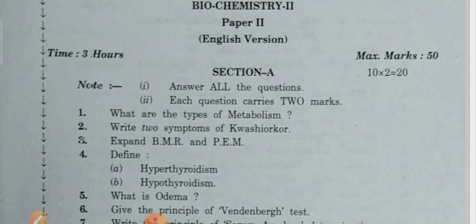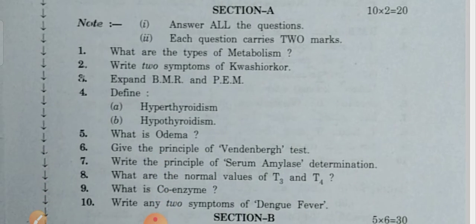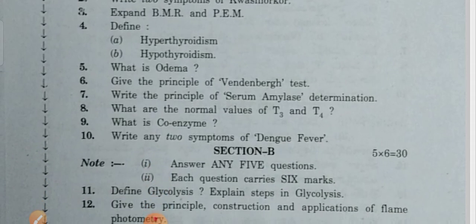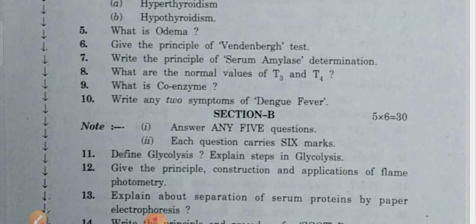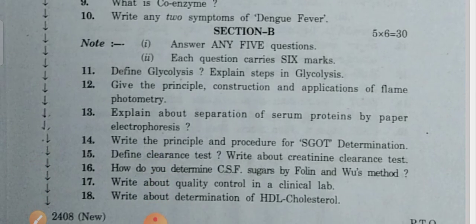Biochemistry — answer all the questions. What are the types of metabolism? Write two symptoms of Kwashiorkor. Expand BMR and PEM. Define hyperthyroidism and hypothyroidism. What is edema? Give the principle of Van den Bergh test. Write the principle of serum bilirubin determination. Write the normal values of T3 and T4. What is coenzyme? Write any two symptoms of dengue fever.